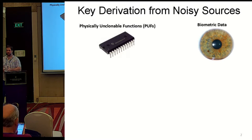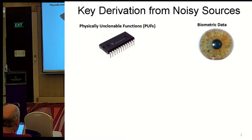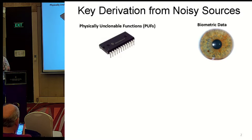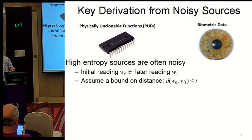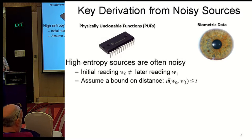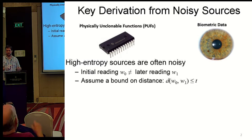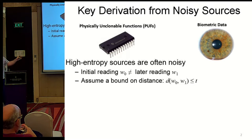The goal of this talk is to understand when we can get key derivation from noisy sources. Noisy sources are things like physical unclonable functions and biometric data. We're considering a class of sources of entropy where they have noise in them. We take some initial reading W0, and a later reading W1 will be a different value, but the distance between W0 and W1 is less than T. For most of this talk, we consider the Hamming distance, but you can define this for any distance metric.